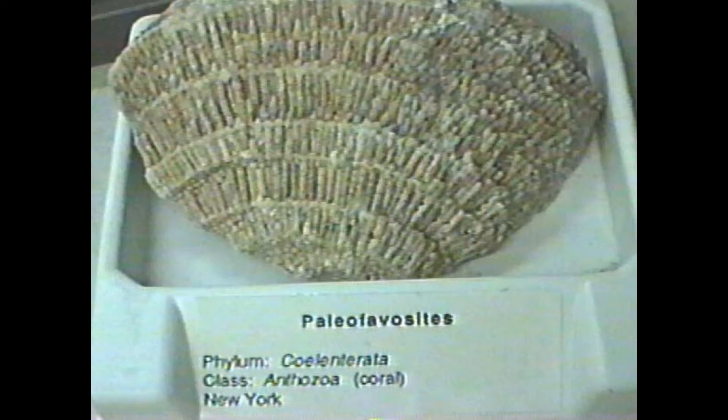The earliest corals had evolved by the Ordovician period, and groups of corals known as tabulate corals and rugose corals became the predominant reef-building organisms through the majority of the Paleozoic Era.